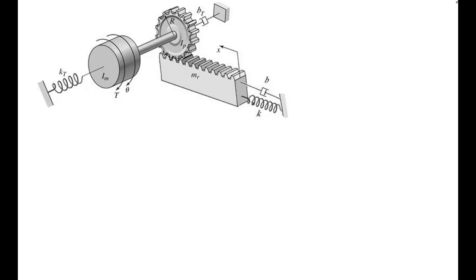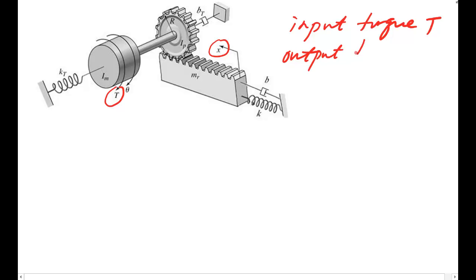Okay, now let's review this mechanical modeling problem. For the following system, the input is a torque and the output is a displacement. So input torque T, output is the displacement x. We want to know the relationship between the input torque and output displacement in differential equations.